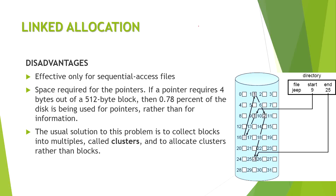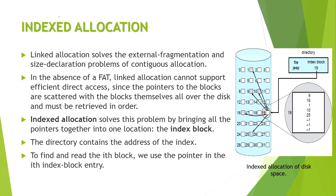Linked allocation requires extra memory just for pointers, which are not actual data. If a pointer requires 4 bytes out of a 512-byte block, it uses 0.78% of memory just for pointers. To reduce this overhead, we use clusters, where the majority of file structures are stored in neighboring blocks.